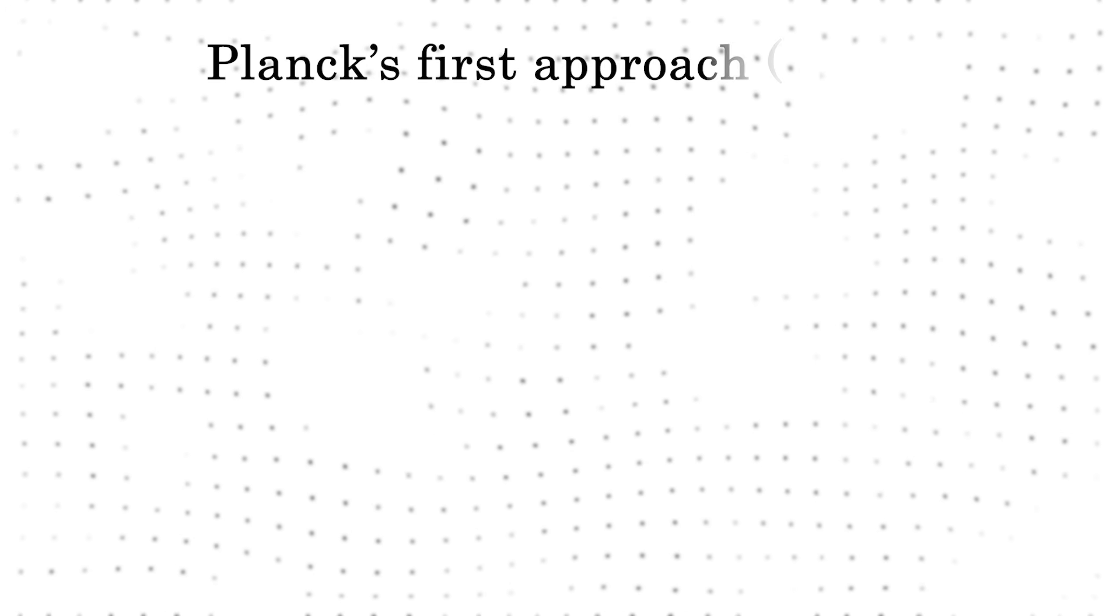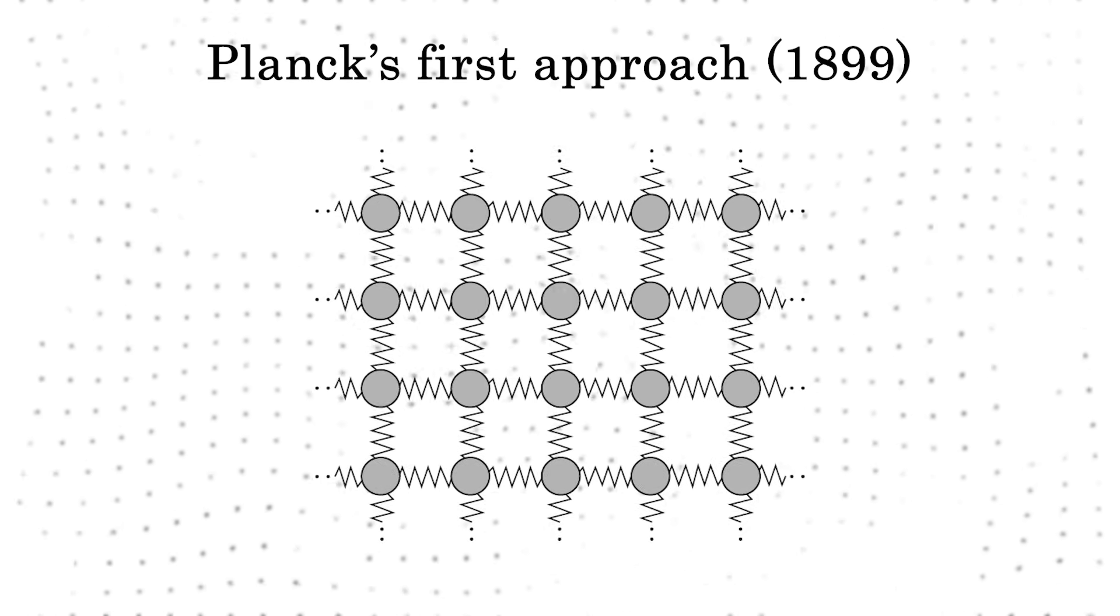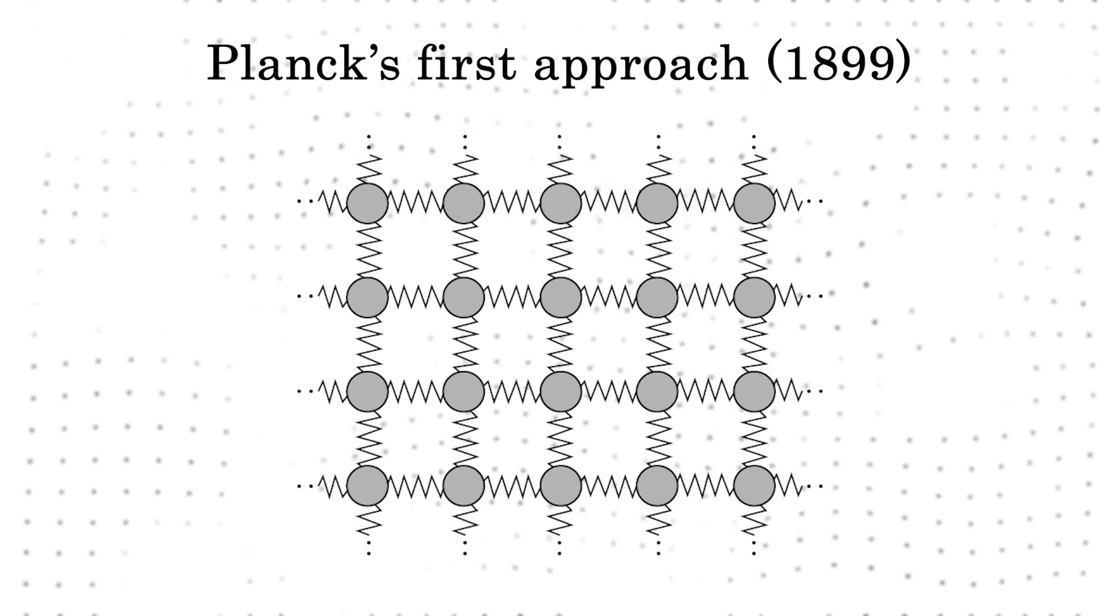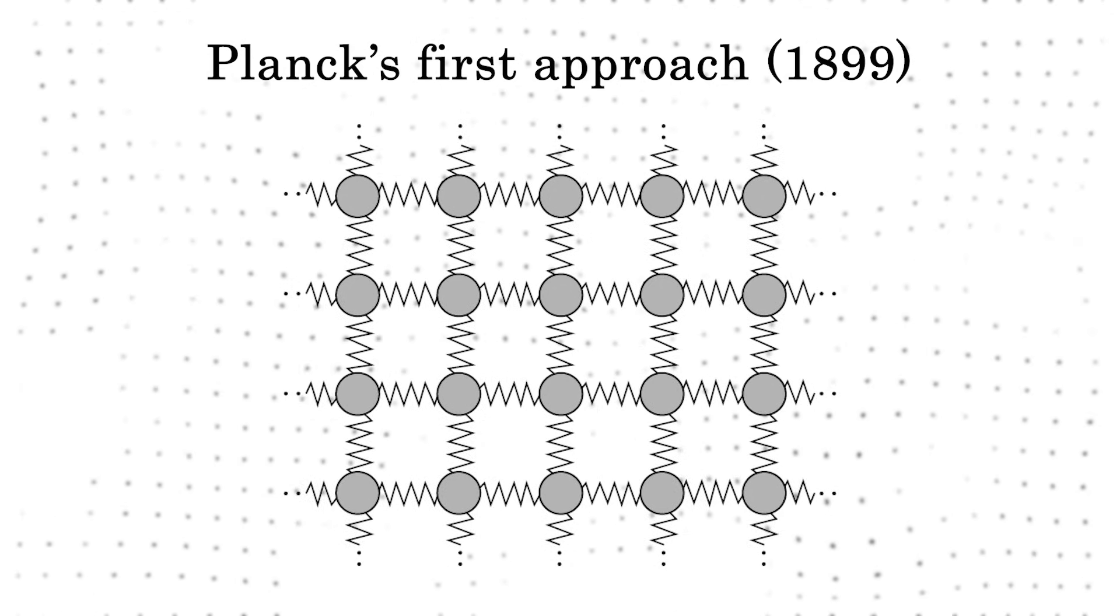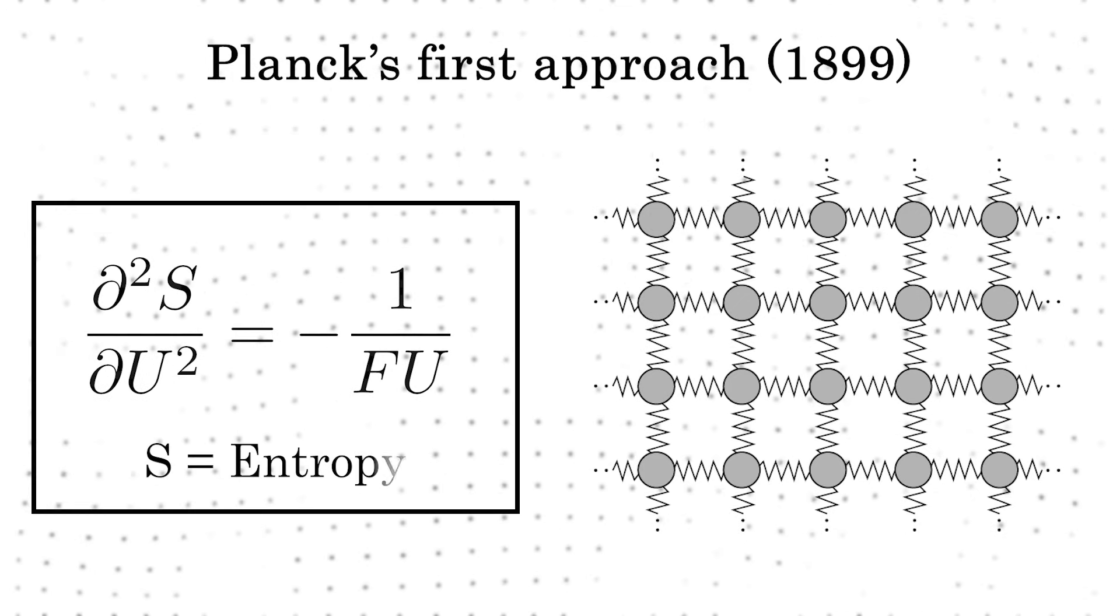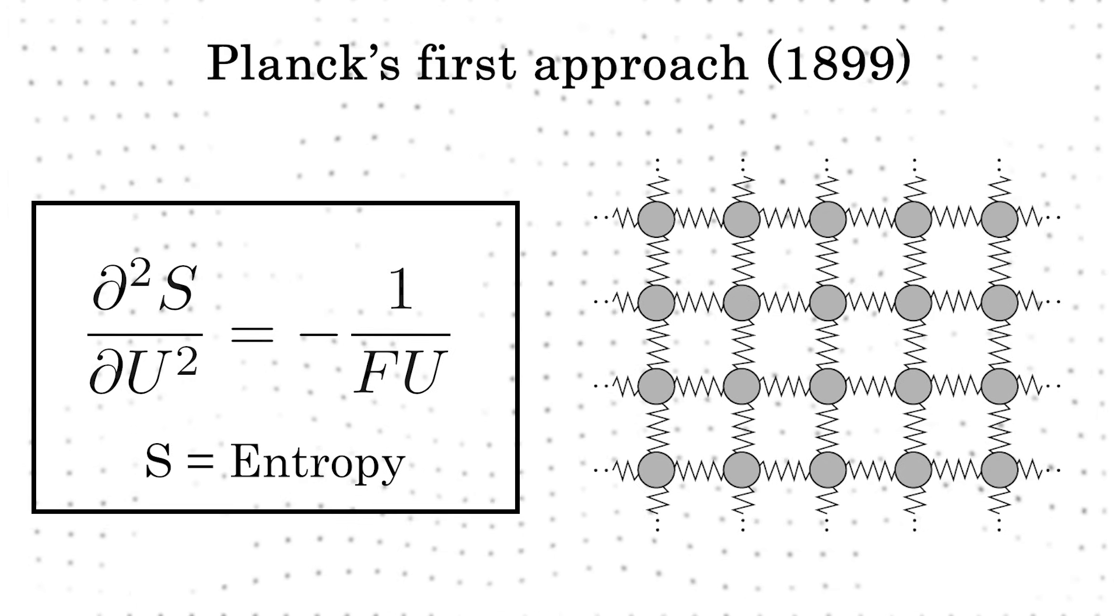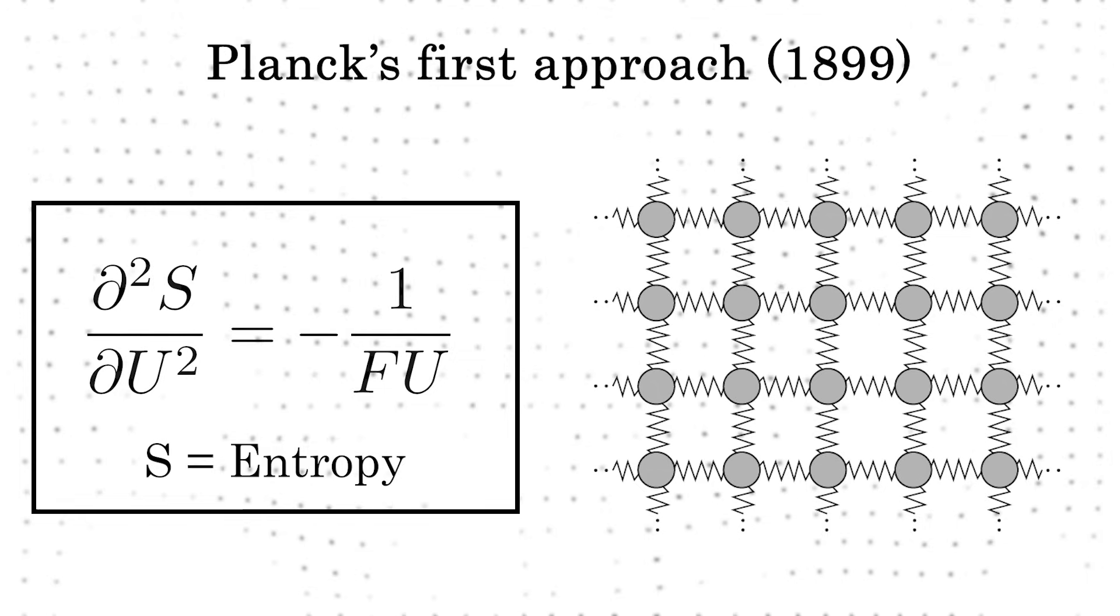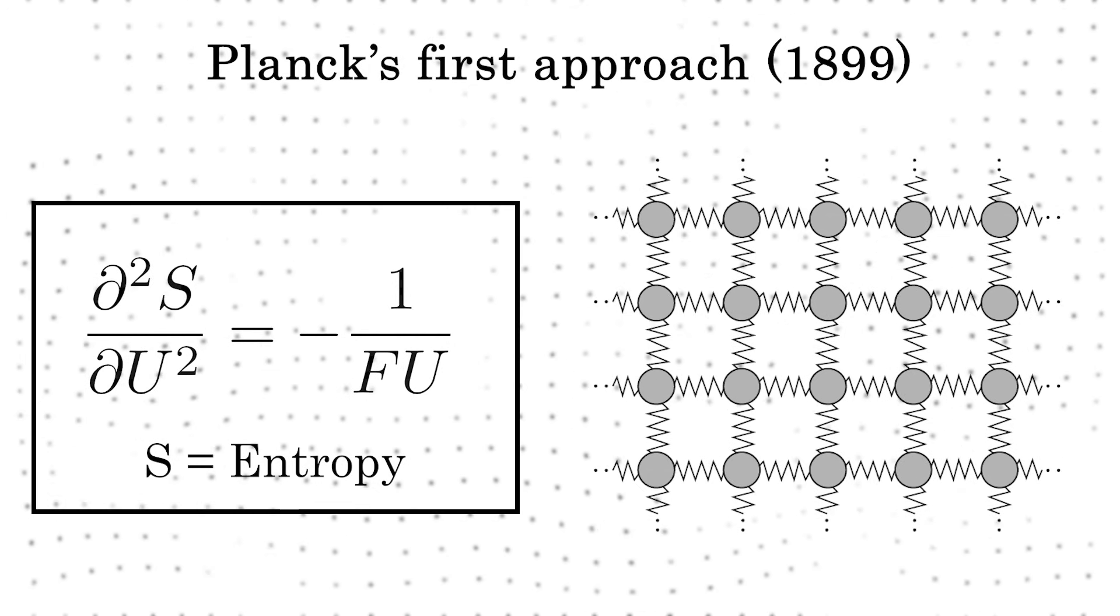However, computing the radiation law of arbitrary material would be too challenging. Fortunately, Planck knew he had no reason to worry. Kirchhoff had already proven that such a formula would be independent of the material's nature. So, Planck considered the simplest object in physics to be a harmonic oscillator. From Wien's radiation formula, Planck showed that the second derivative of the entropy is negative. This is the second law of thermodynamics. Planck was impressed by this elegant simplicity, convinced he was on the brink of a profound thermodynamic truth. Kirchhoff's challenge had finally been met.